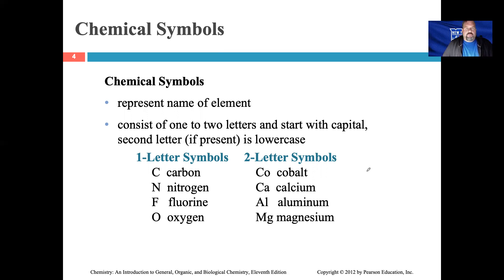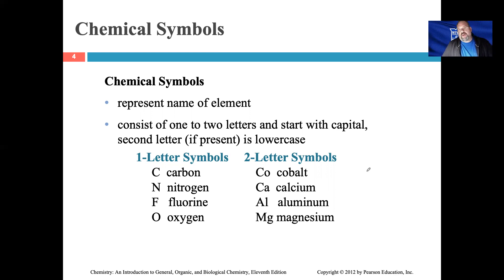Many chemical symbols are straightforward. For example, C is the symbol for carbon, N is the symbol for nitrogen, Al is the symbol for aluminum, and Mg is the symbol for magnesium. However, some chemical symbols are not so obvious.